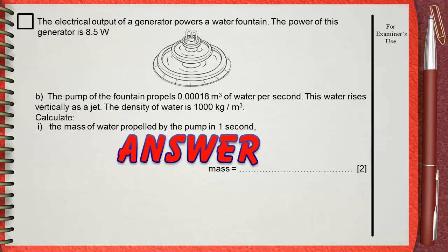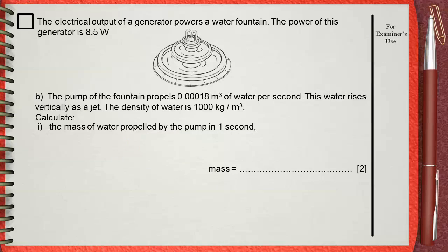The same thing we do every time: collect the givens. 8.5 watts is the power. 0.00018 meter cubed is the volume. And 1000 kilograms per meter cubed is the density. And he's asking for the mass. Do we have enough givens for the mass? I think the equation density equals mass divided by volume will work.